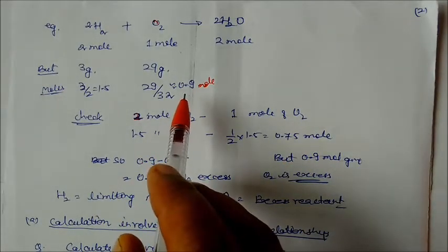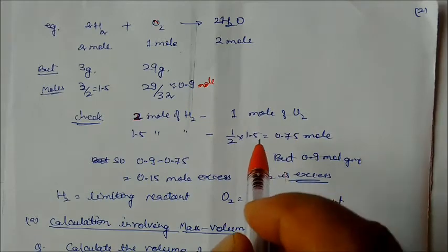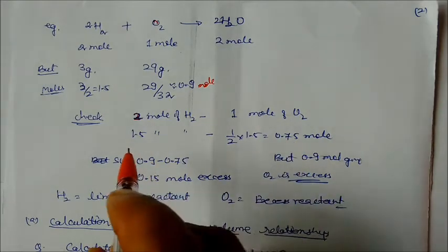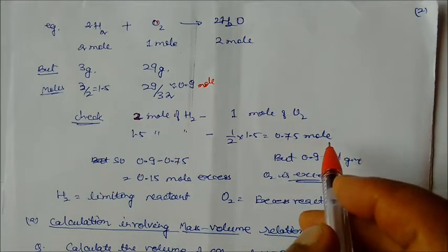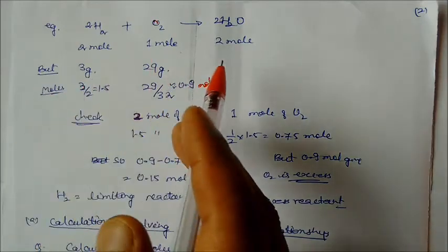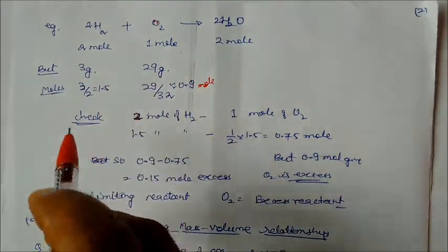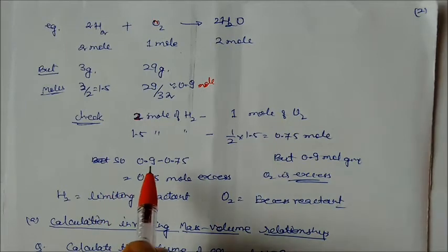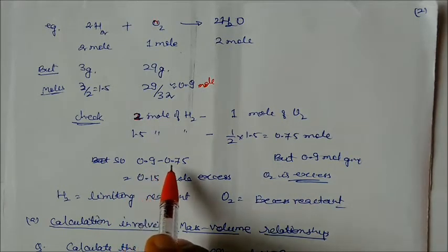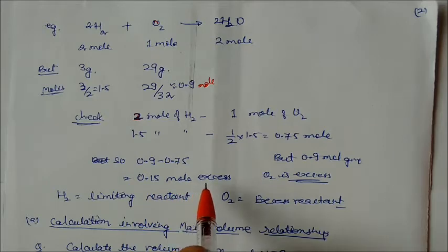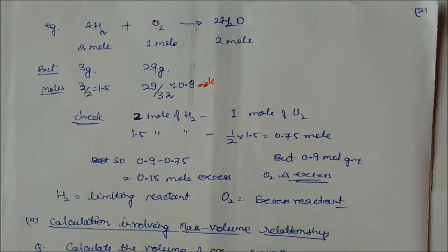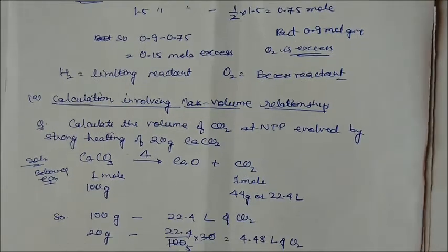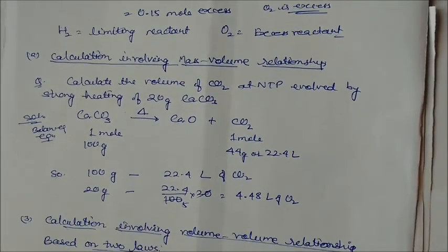We actually require 0.75 moles of oxygen but we are supplying 0.9 moles, so oxygen is in excess. Hydrogen at 1.5 moles will be completely consumed with 0.75 moles of oxygen. Remaining oxygen = 0.9 − 0.75 = 0.15 moles left over. Therefore, oxygen is the excess reagent and hydrogen is the limiting reagent.